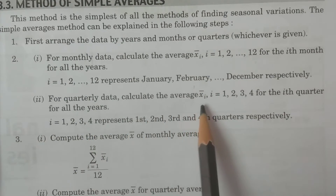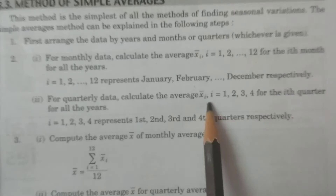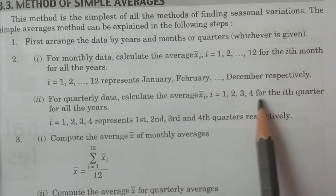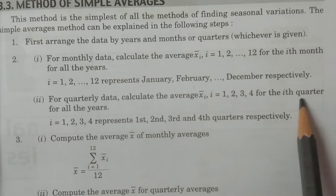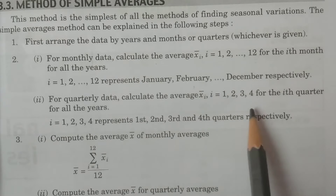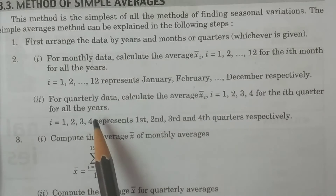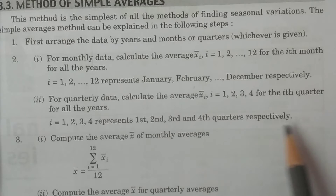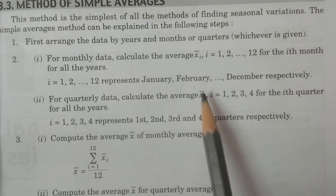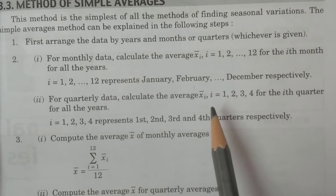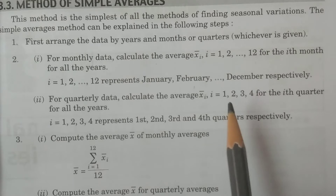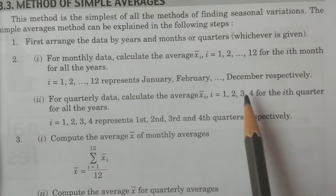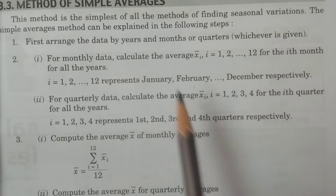Similarly for quarterly data, calculate x̄ᵢ for i = 1 to 4 — for each quarter across all years. That gives you x̄₁, x̄₂, x̄₃, x̄₄ for the first, second, third, and fourth quarters respectively.